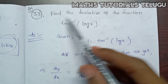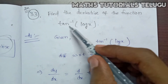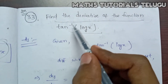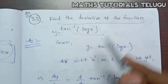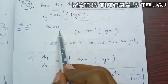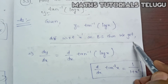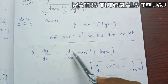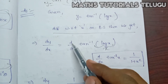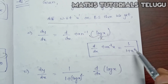Next problem, number 33. Find the derivative of the function tan inverse of log x. So, given that y is equal to tan inverse of log x, we need to find dy by dx. The formula is: d by dx of tan inverse x is equal to 1 divided by 1 plus x squared.